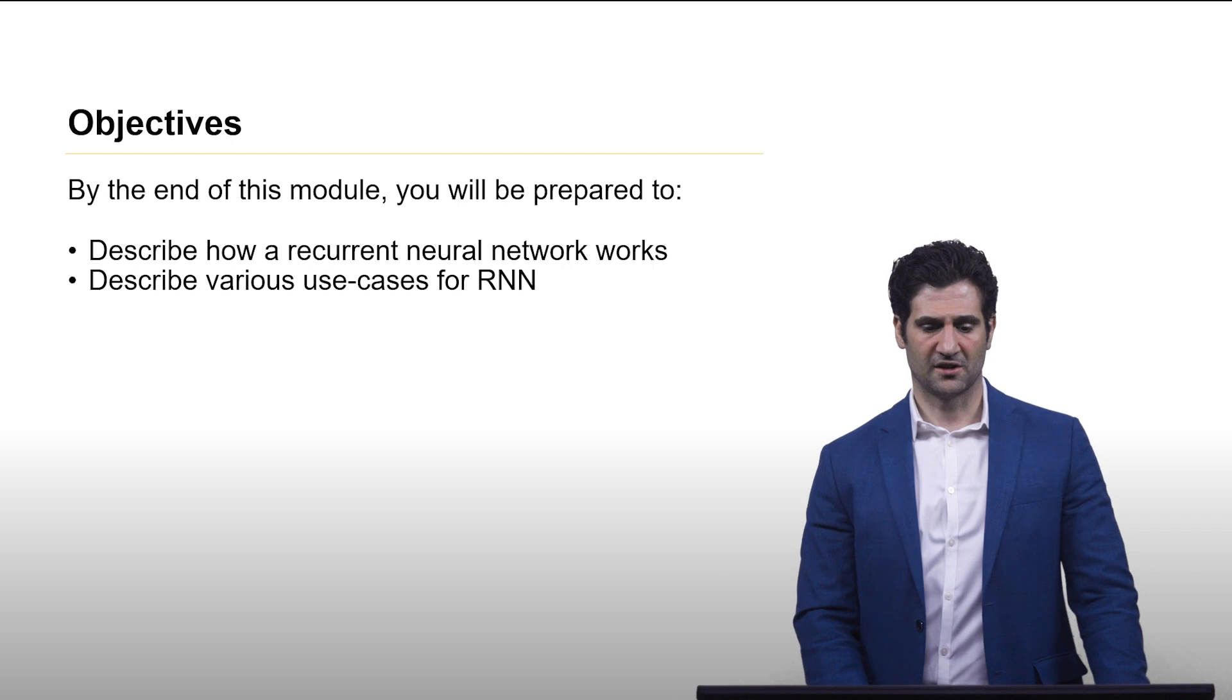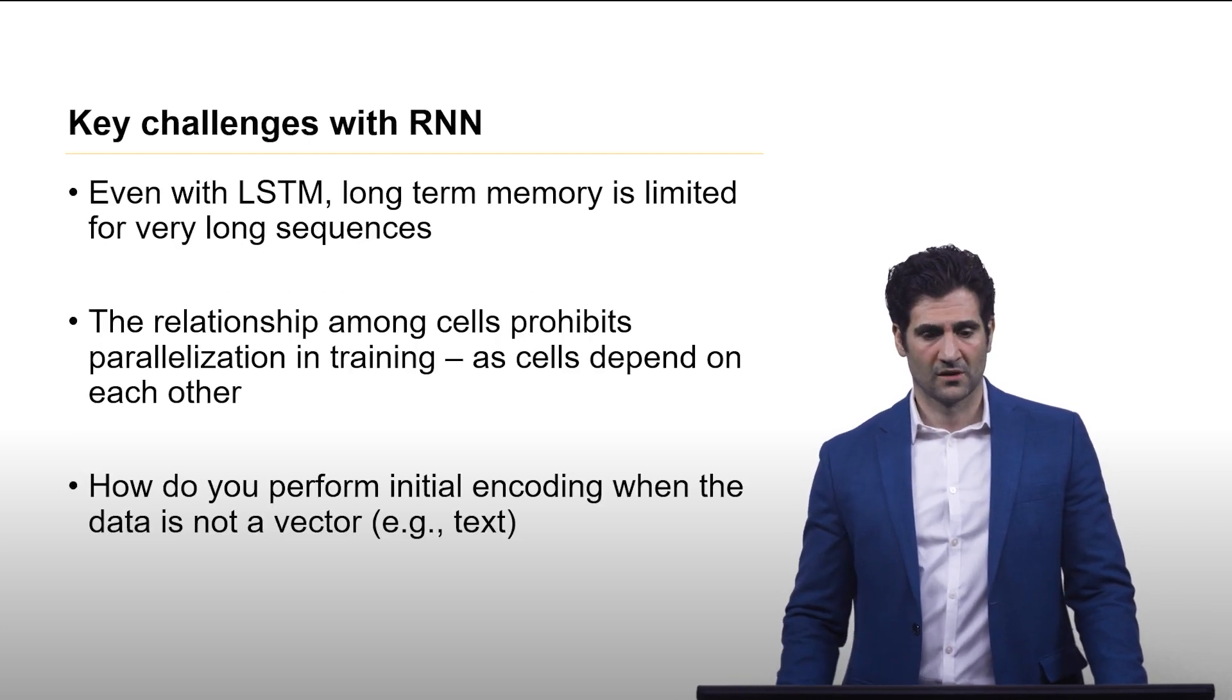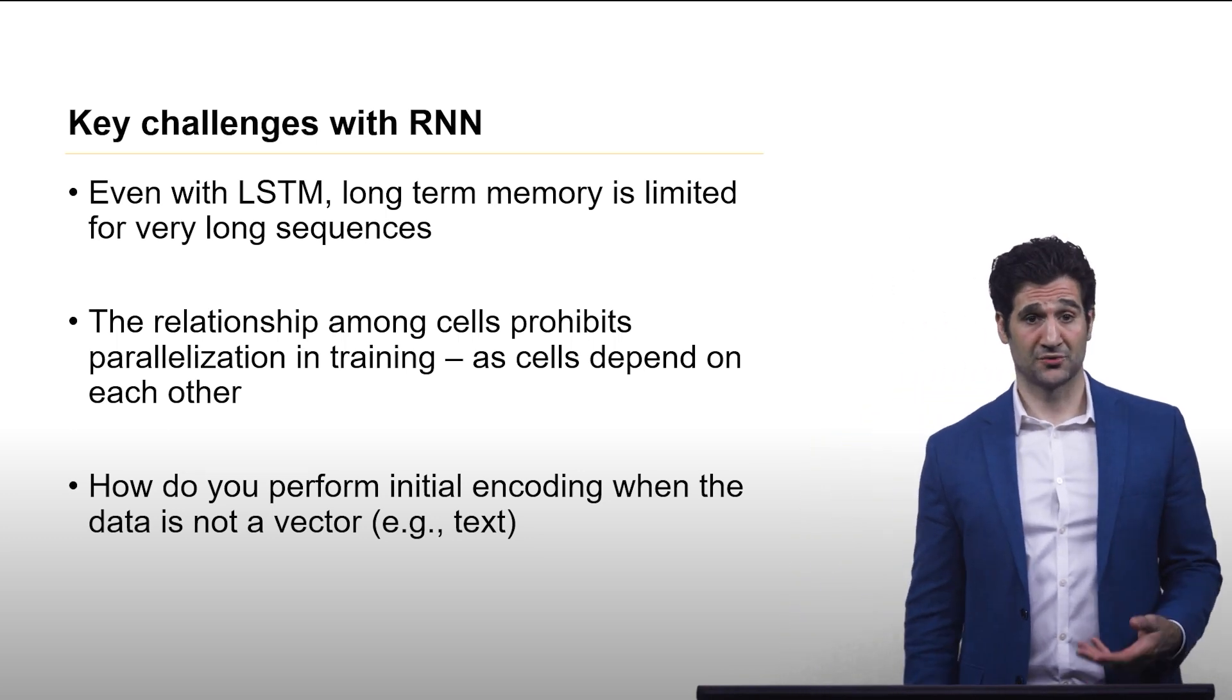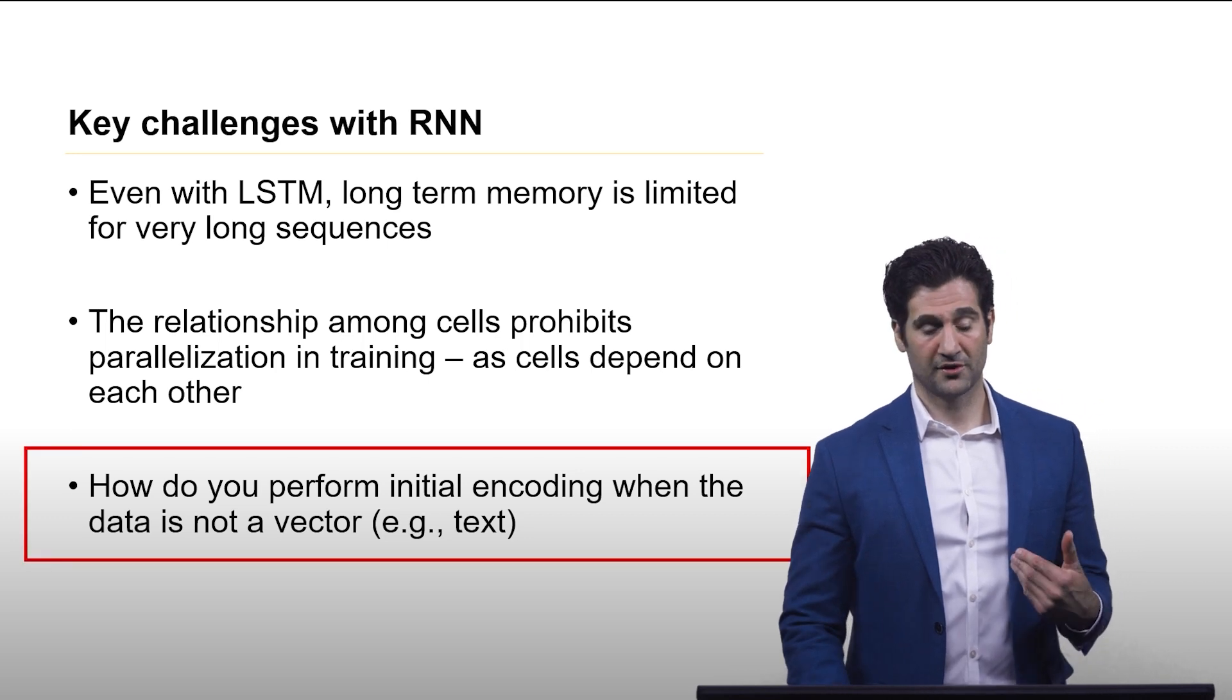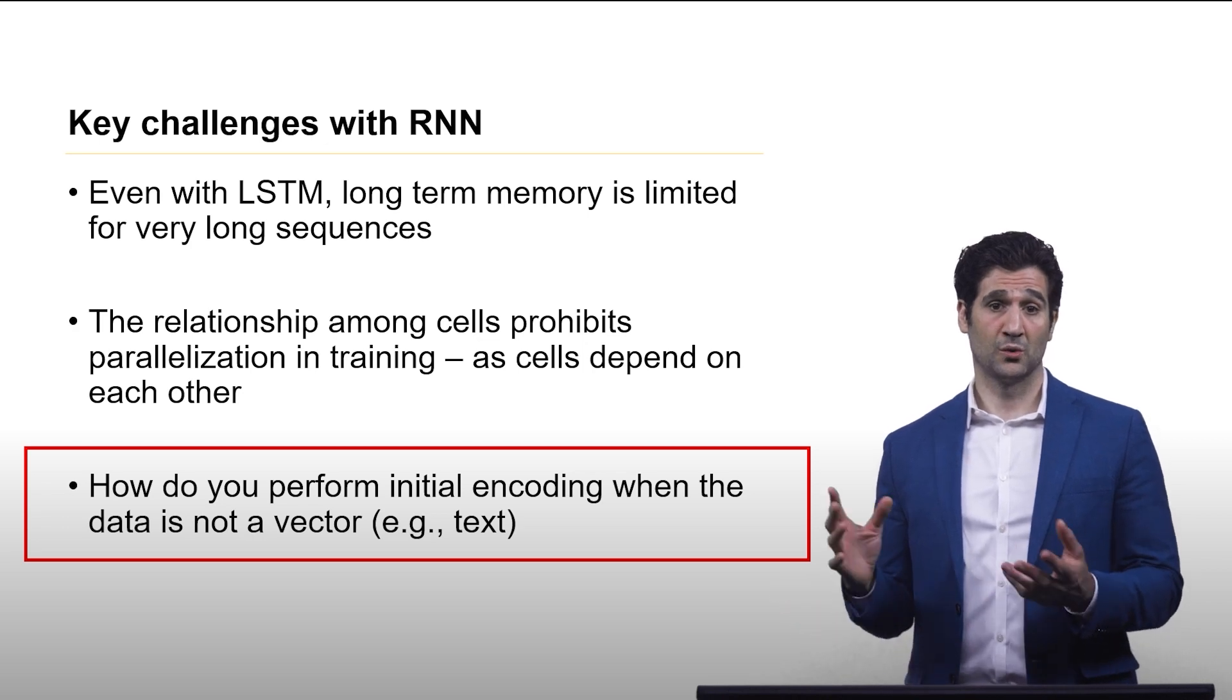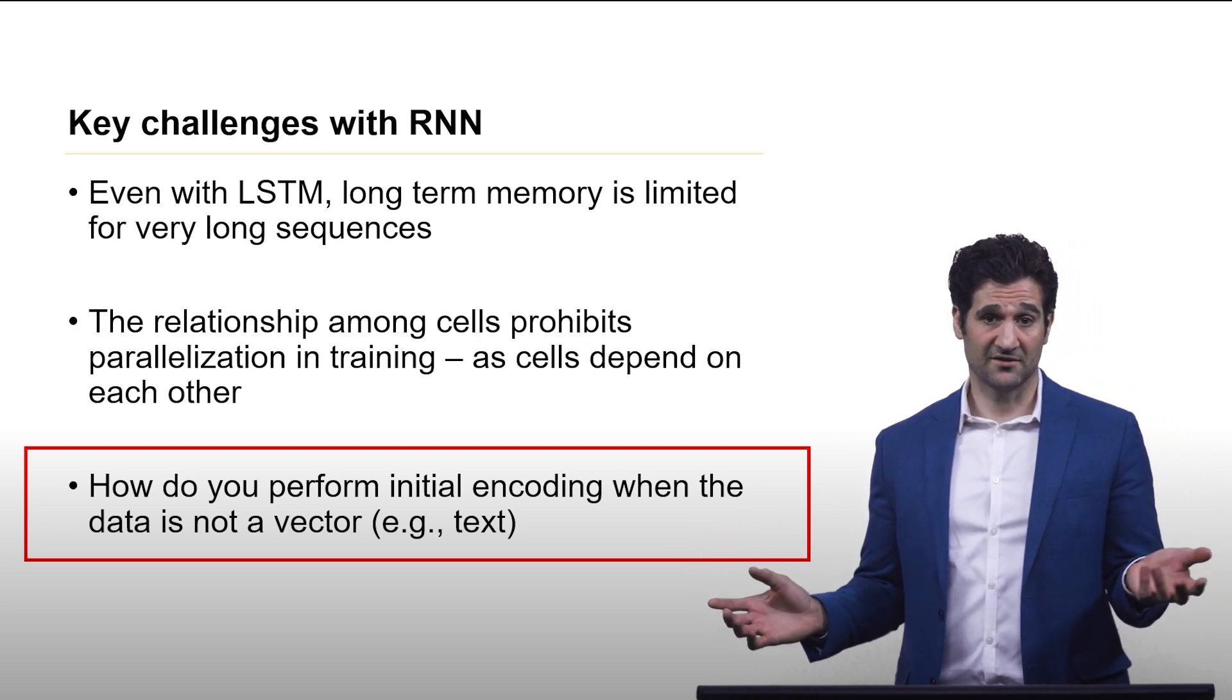And so here are the objectives. In an earlier lecture, we talked about some key challenges with RNNs. Right now, we're going to focus on the third of those, which is how do you perform an initial encoding when the data is not a vector, because text is not a vector.